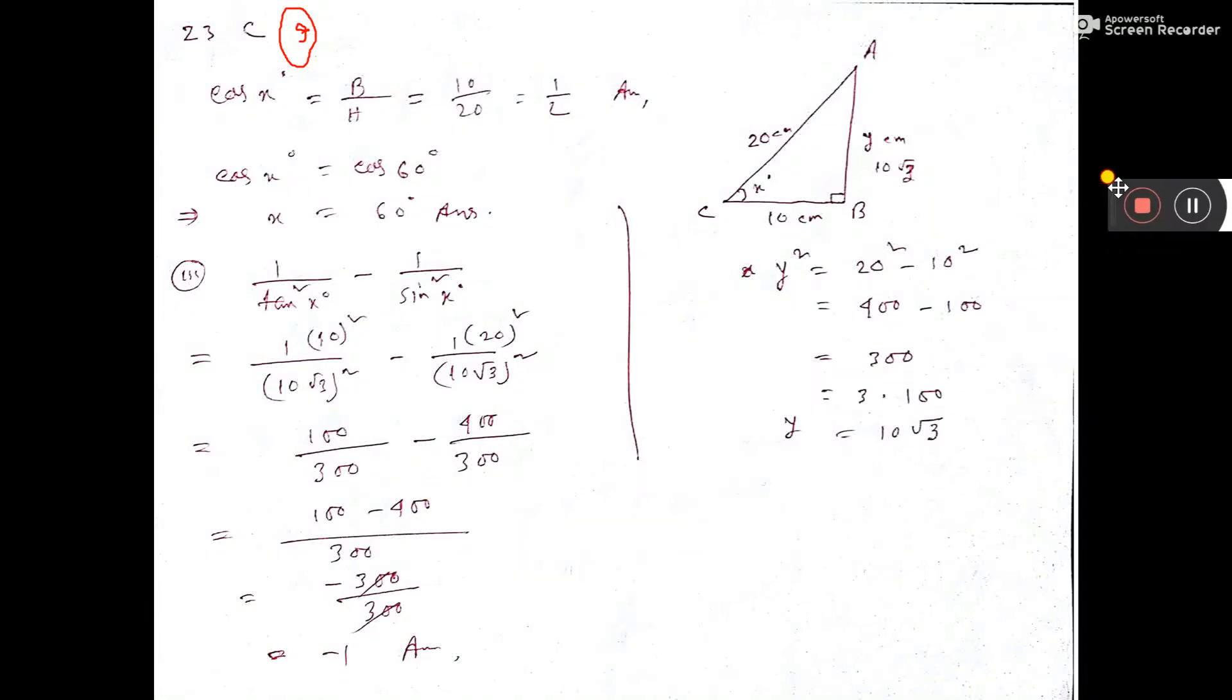Now sum number 19. This is the diagram, cos x degree. See here x degree - that is base by hypotenuse, that is 10 by 20, that is half, the answer.